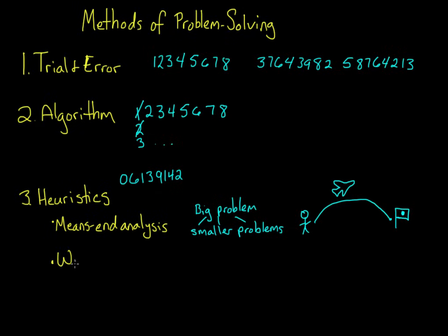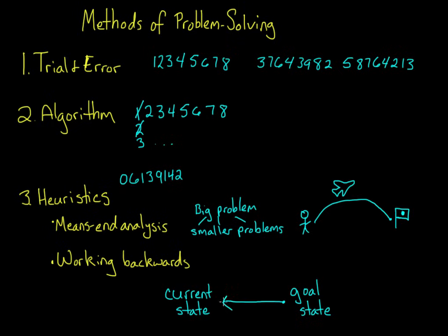A second heuristic is working backwards. Now with means-end analysis, we were trying to work from our current state toward our goal state. With working backwards, however, you start with your goal state and use it to suggest connections back to your current state.